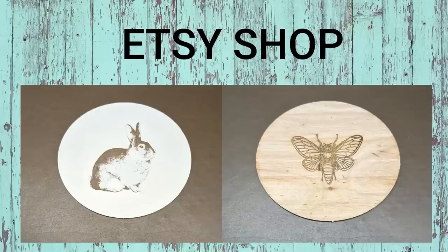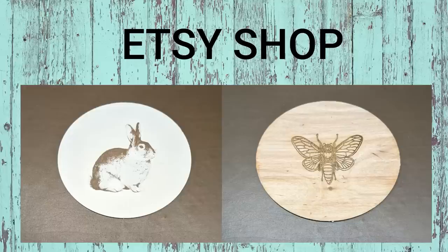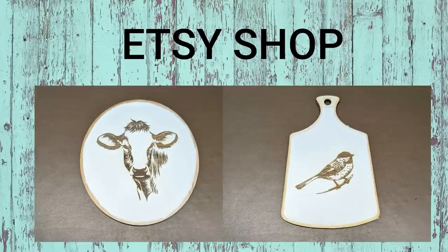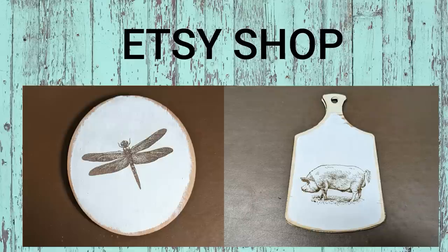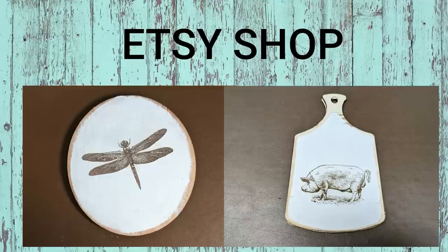I wanted to pop in here real quick and give you an update on my Etsy shop. I've got some new products out and thanks to you guys I've got some really wonderful ideas for these wood slice engravings. You can see there's a bunny and a bumblebee, I have the cow which I did in a previous video, I've also offered this chickadee, and then I have a pig and a dragonfly. They are available in either the round wood slice or the cutting board, and you can also get them in plain wood or the white painted on top.